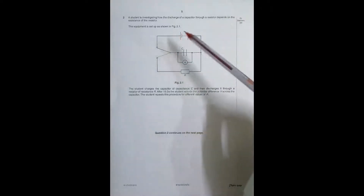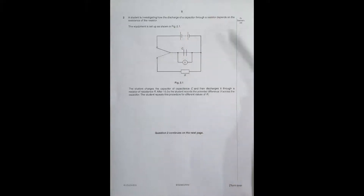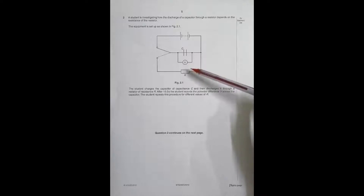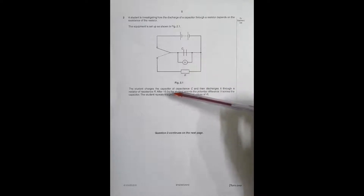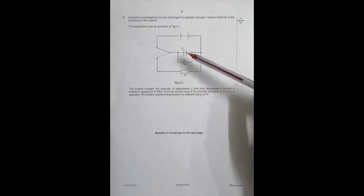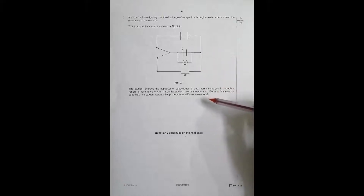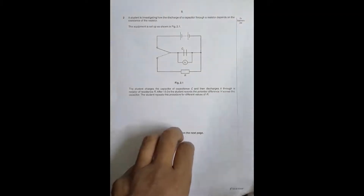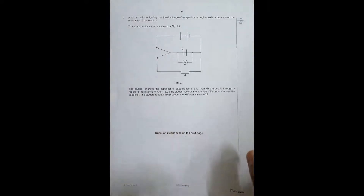The student charges the capacitor and then discharges it through a resistor of resistance R. After 15.0 seconds, the student records the potential difference V across the capacitor using a voltmeter. The student repeats this procedure for different values of R — first charging, then discharging, changing the value of R each time, and measuring the PD after every 15 seconds.